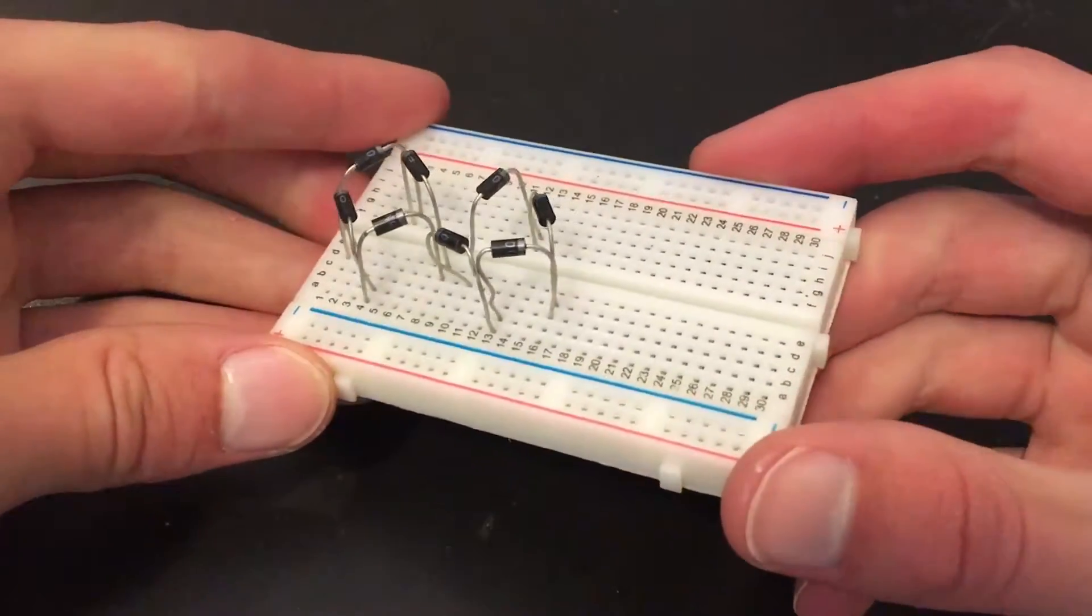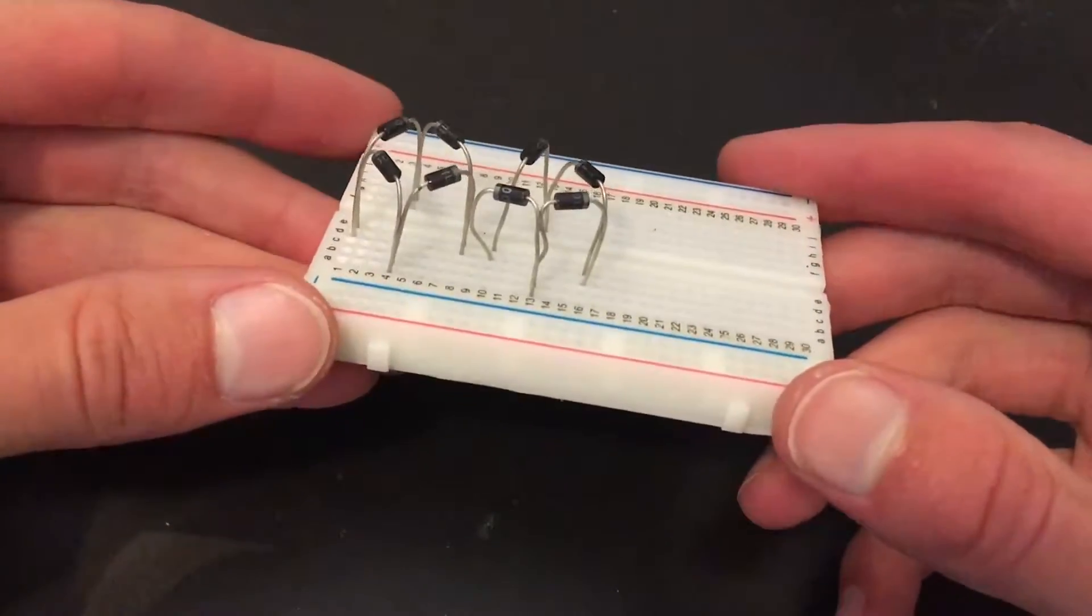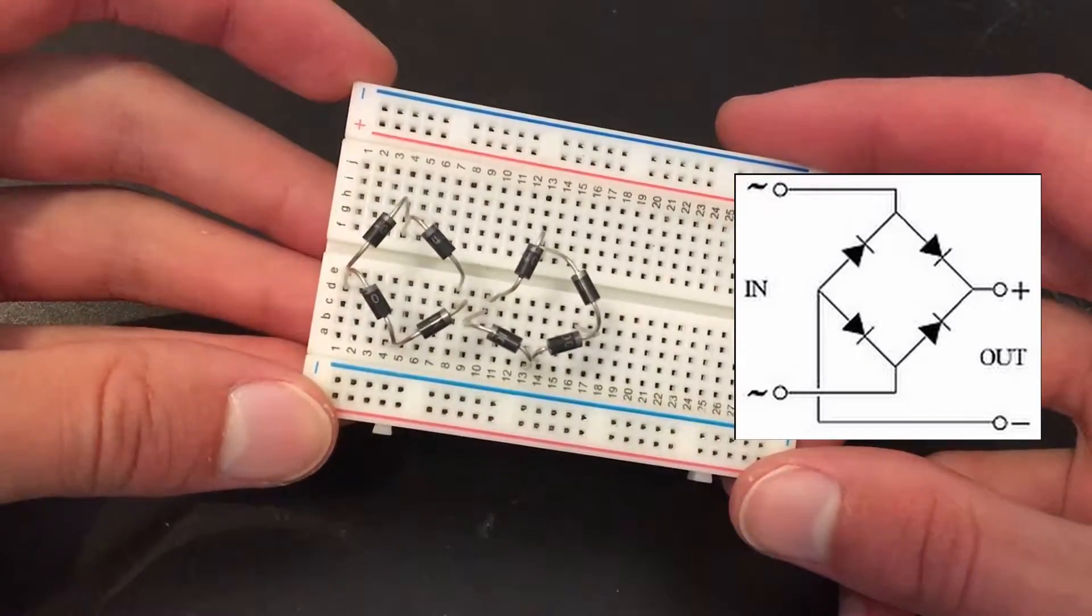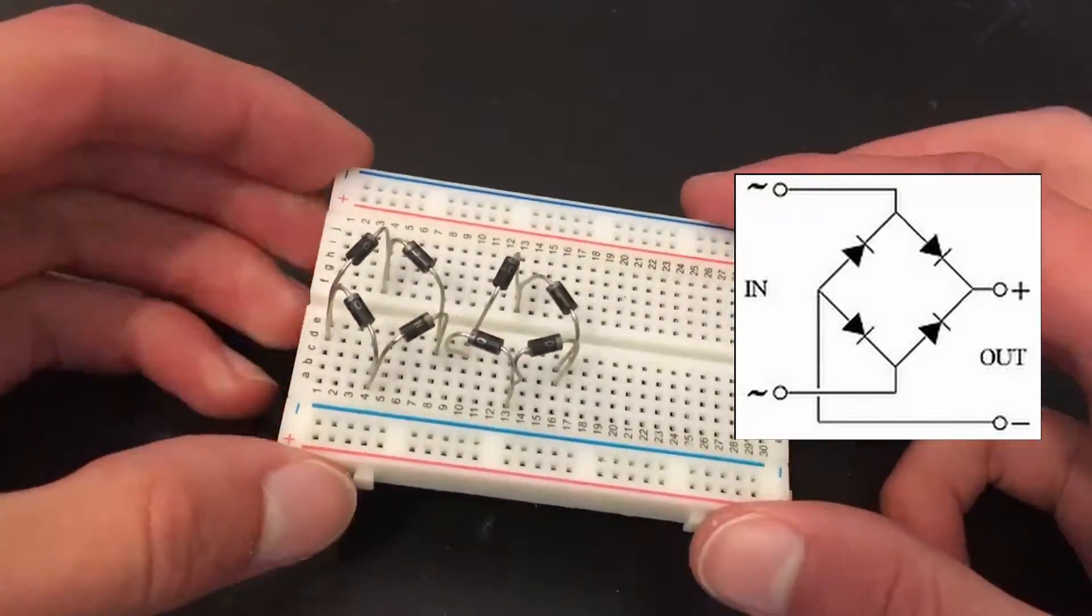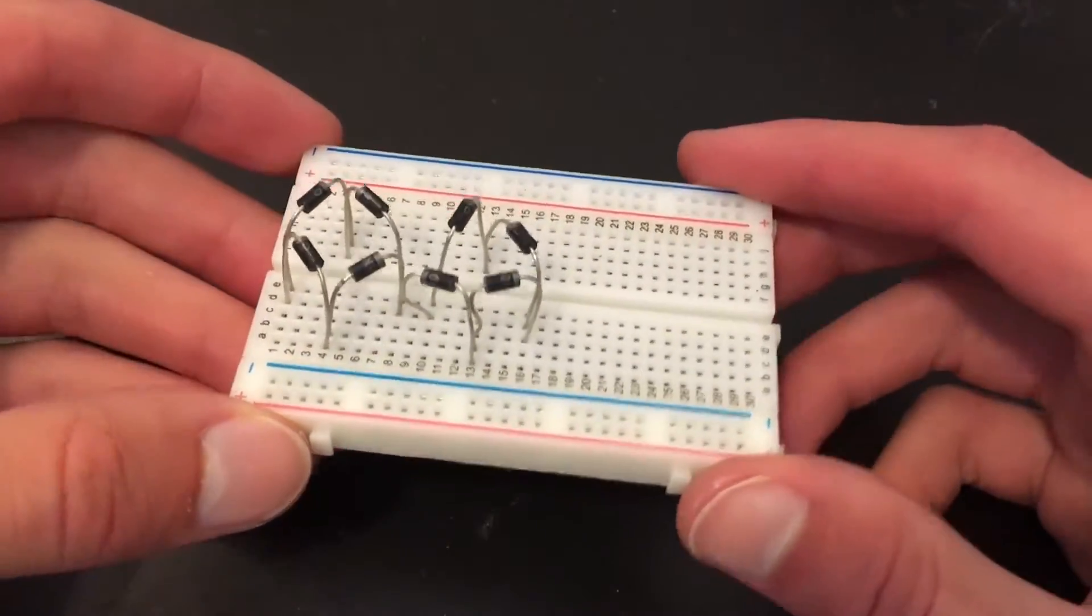First off, the two full bridge rectifiers. You can see I have them wired up in the configuration that was shown before, and we just need to plug our stepper into this.